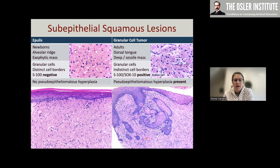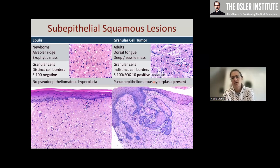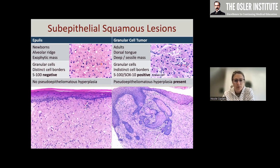Granular cell tumor can occur in the oral mucosa, skin, esophagus, etc. — granular cells percolating through the stroma with associated pseudoepitheliomatous hyperplasia at the surface. Historically, 'epithelioma' was the name for squamous cell carcinoma, so this is pseudocarcinomatous but non-malignant. It expresses Schwannian-like markers: S100 and SOX10. In contrast, epulis presents as exophytic lesions on the alveolar ridges of newborns — very clinically classic — with distinct cell borders, S100 negativity, and absence of overlying hyperplasia, unlike granular cell tumor.